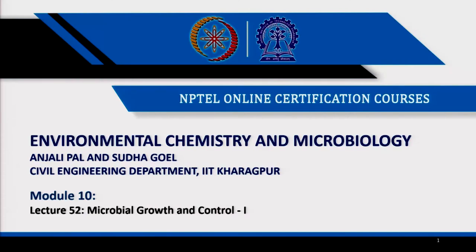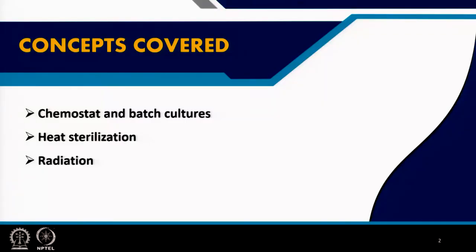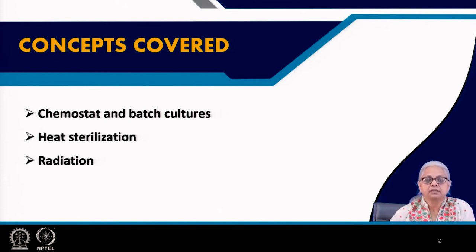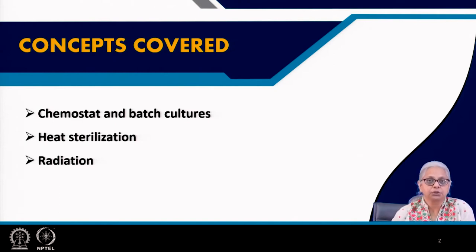Welcome everyone. This is a new topic — we are going to look at methods of controlling microbial growth, which I am calling microbial growth and control. It is divided into two parts and this is lecture number 52 of module 10. We are going to start with a chemostat and batch cultures, how we grow microbes in the lab, how we control their growth, and the major factors that need to be controlled. Then we come to heat sterilization and radiation.